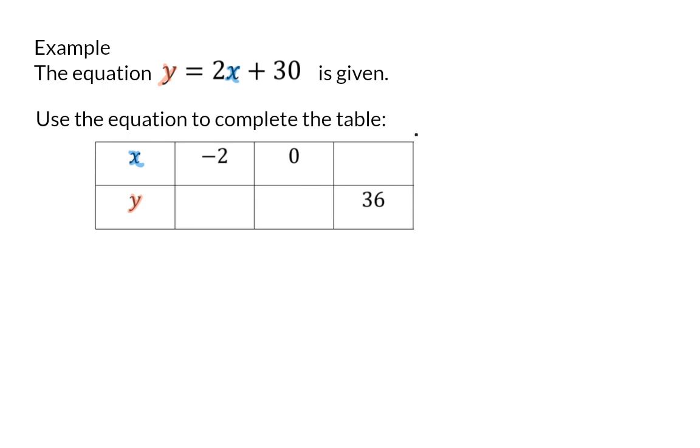Here, we are given the equation y is equal to 2x plus 30, and we need to use this equation to complete the table. In the first column, we are given the x value of minus 2, which means I'm going to use substitution to change the x value in my equation to minus 2. That means that here we have minus 4 plus 30, which gives a y value of 26.